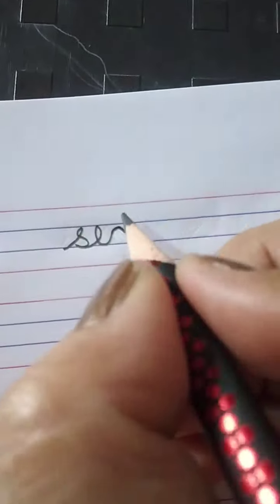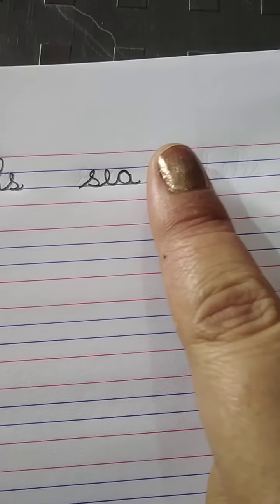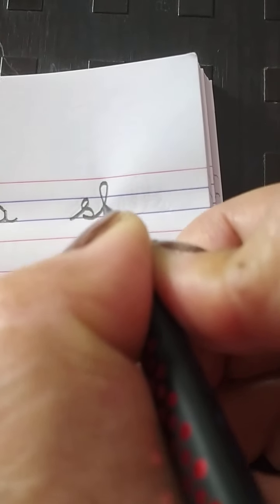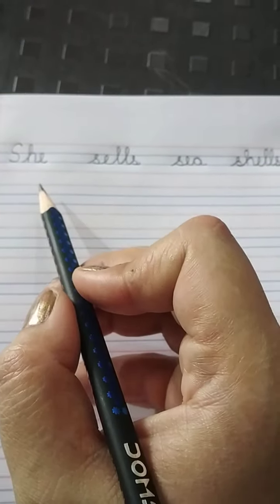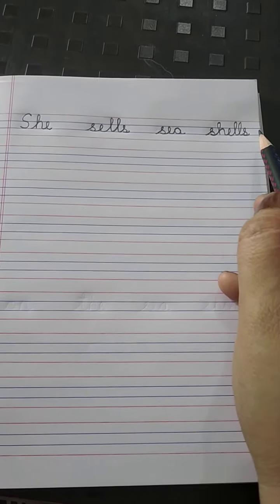Then S, E, A. Sea. One finger space. Shells: S, H, E, double L, S. She sells sea shells.